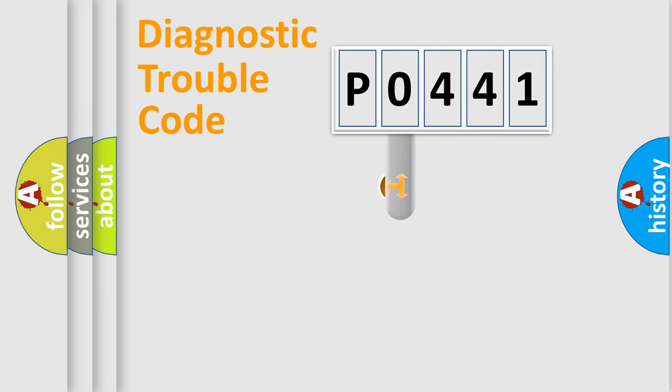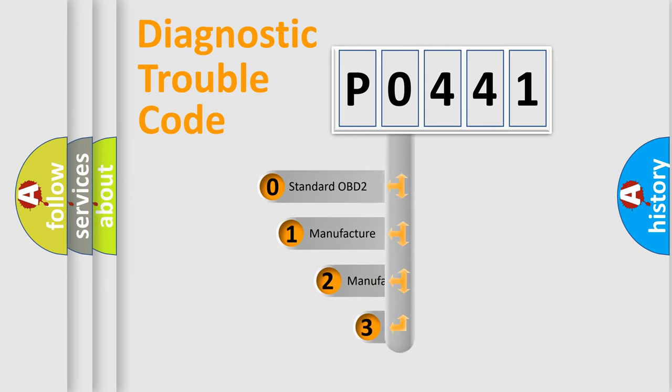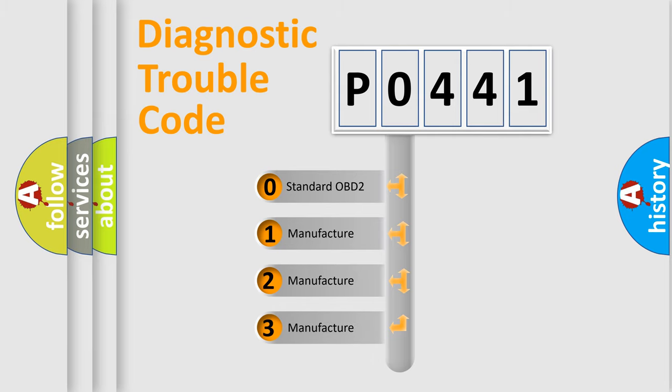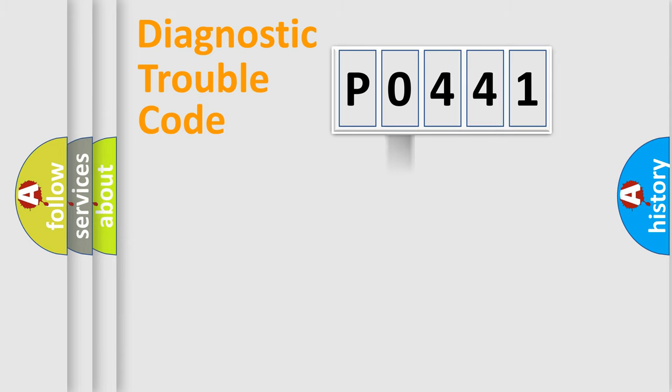This distribution is defined in the first character code. If the second character is expressed as zero, it is a standardized error. In the case of numbers 1, 2, or 3, it is a manufacturer-specific expression of the error.